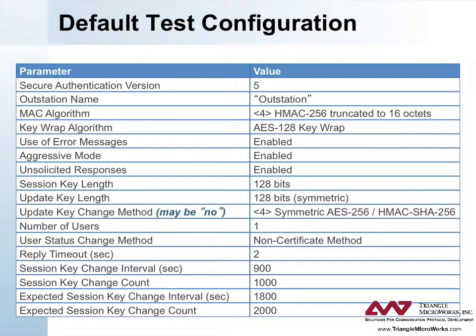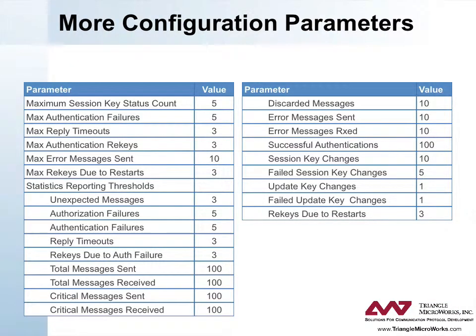This table is from the Secure Authentication Test Procedures. This table shows items that need to be configured in order for secure authentication to work correctly, along with typical values. These items typically need to be configured the same way on both the master and the outstation. This table shows typical threshold values. The max items affect the behavior of the system and should be chosen carefully.